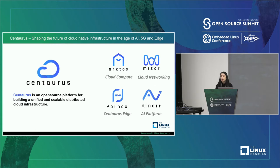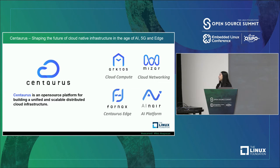Centaurus is also an umbrella project where we host four sub-projects: Octos, our cloud compute sub-project; Mizar, our cloud networking sub-project; 4Next, our Centaurus Edge sub-project; and Elnair, our AI platform sub-project.